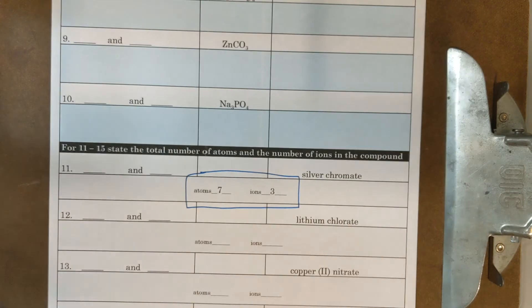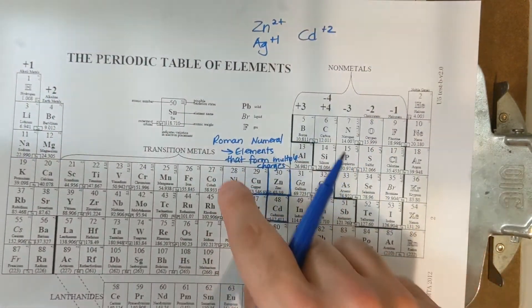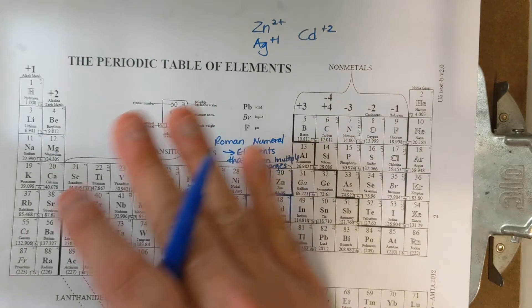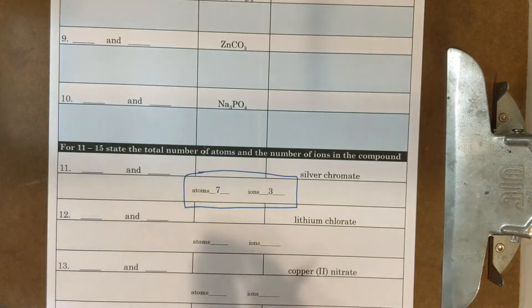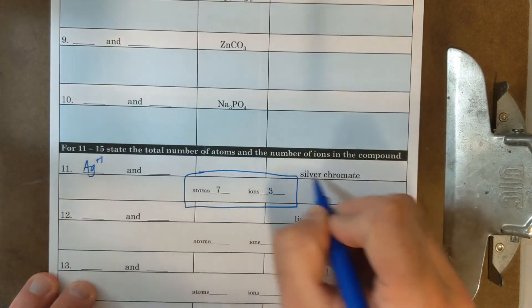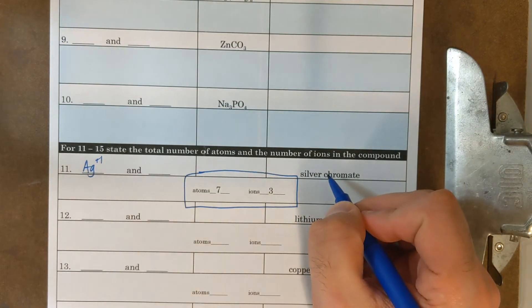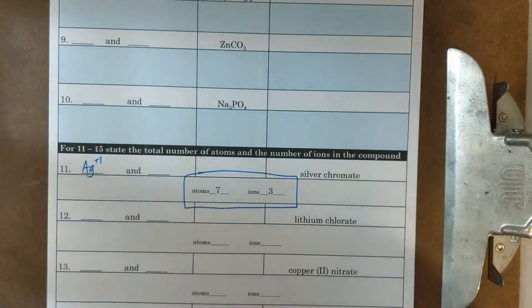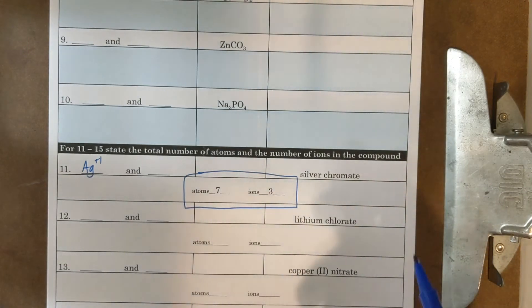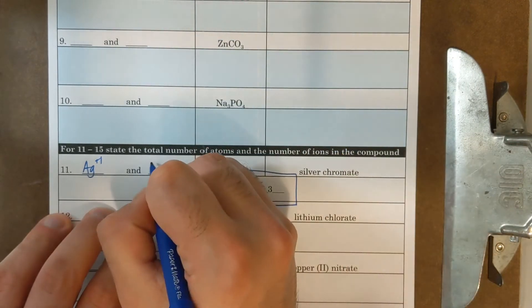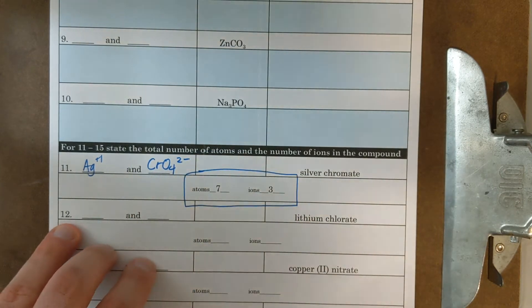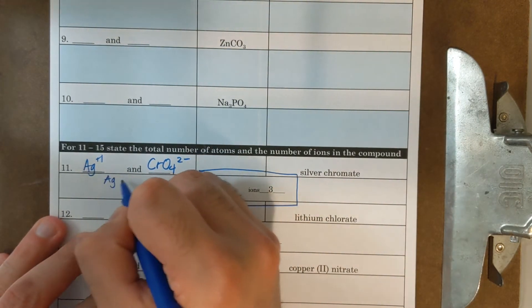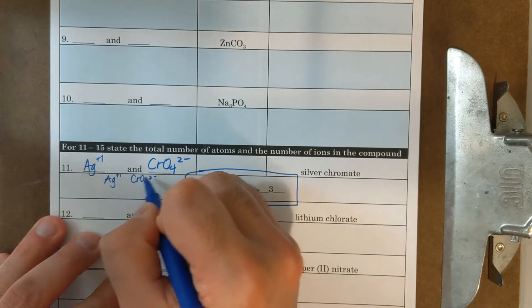So I have silver and chromate. If I look on the periodic table, I'm going to look for silver. Silver, I wrote on the top, it is in the lump of transition metals, but it's the one that's the exception that doesn't need a Roman numeral. And so silver is AG plus one. And that's why there's no Roman numeral in the name because silver only forms one charge again.